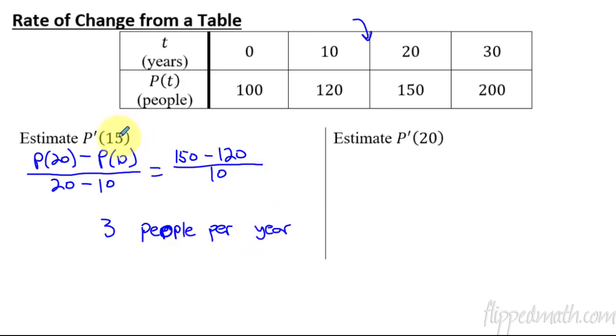We've done that before, but now we see p'(20). Well, 20 is right here on the table, so what in the world, what numbers do we use? There's actually three options you could do. We could put 20 right in the middle, so let's say p(30) minus p(10), and if we do that, that'll give us an estimate. 30 minus 10—that would give us an estimate of the rate of change at 20 by taking the numbers that are surrounding it. That's actually just like what we did with 15.